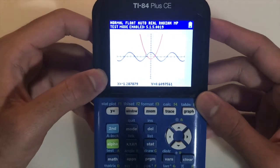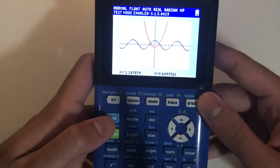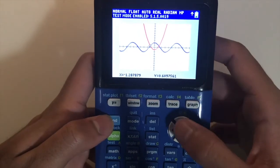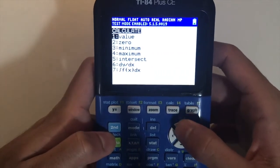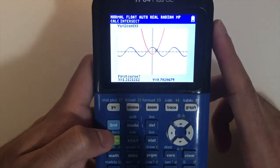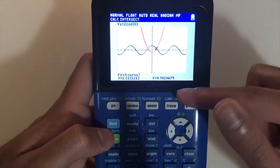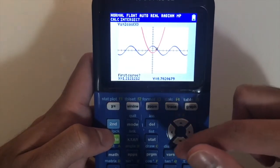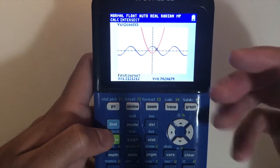So what you want to do first is click on 2nd, trace, and then you want to scroll down to intersect. Now you'll see that you will be able to use these four arrows to figure out that point of intersection.